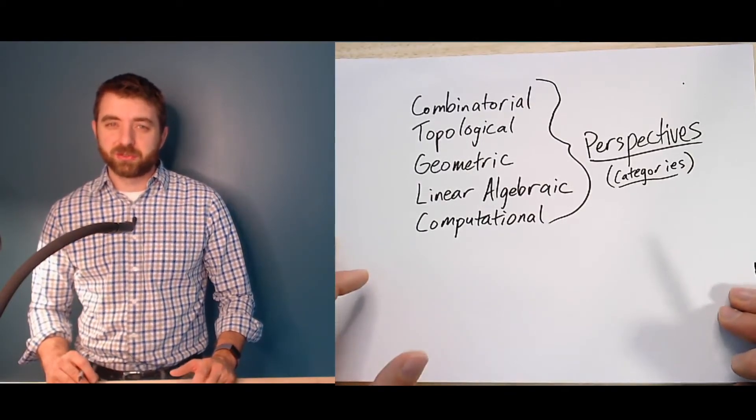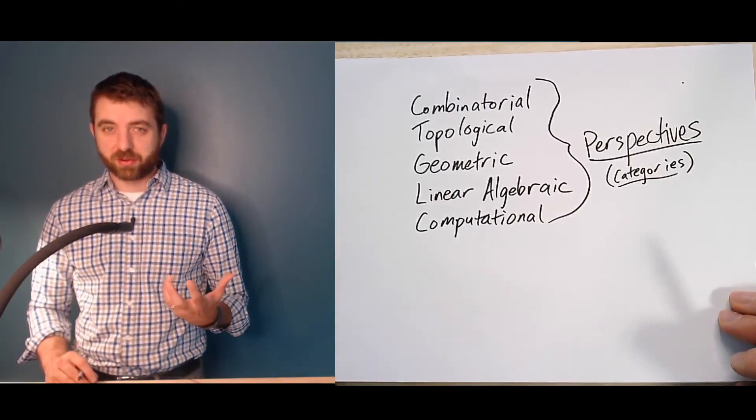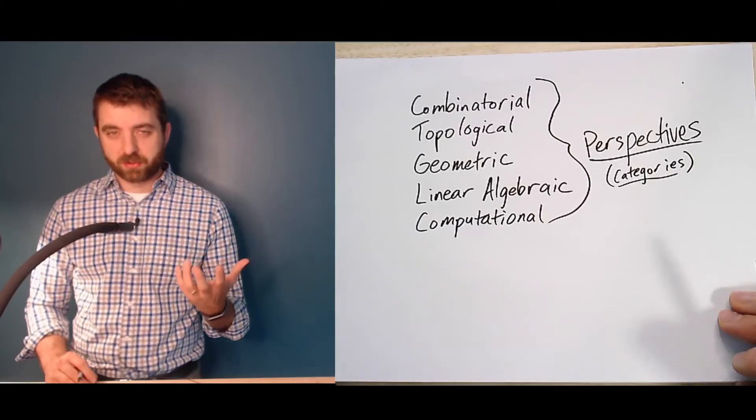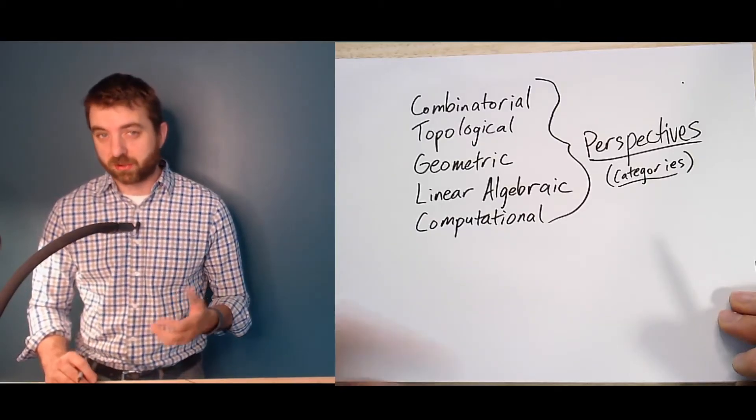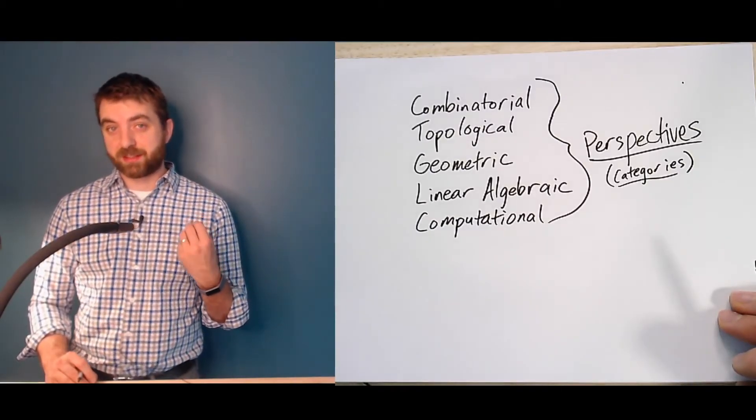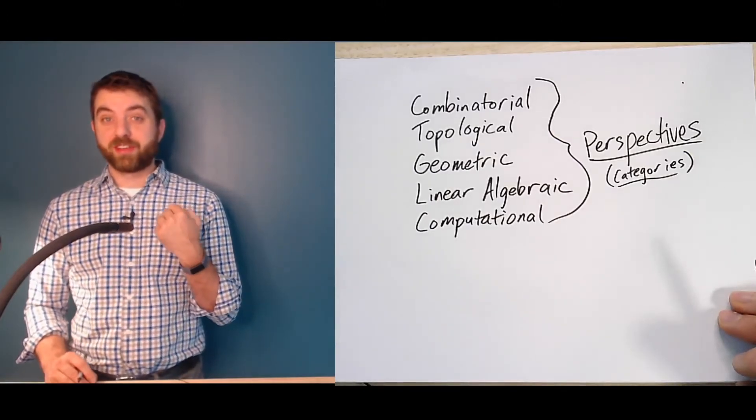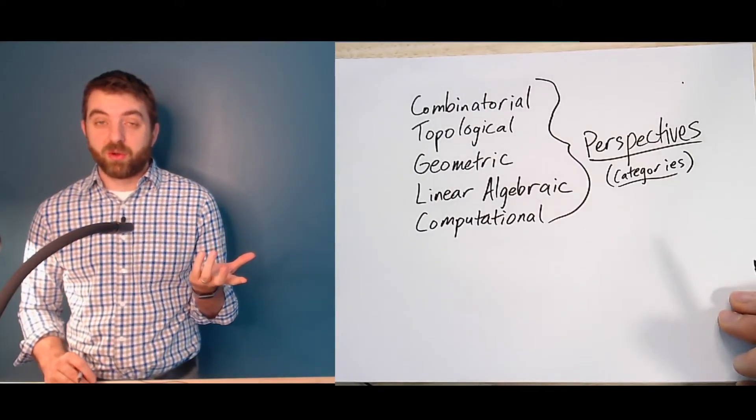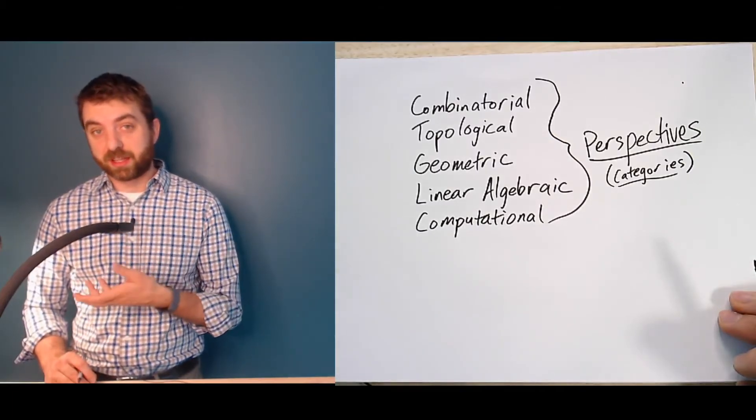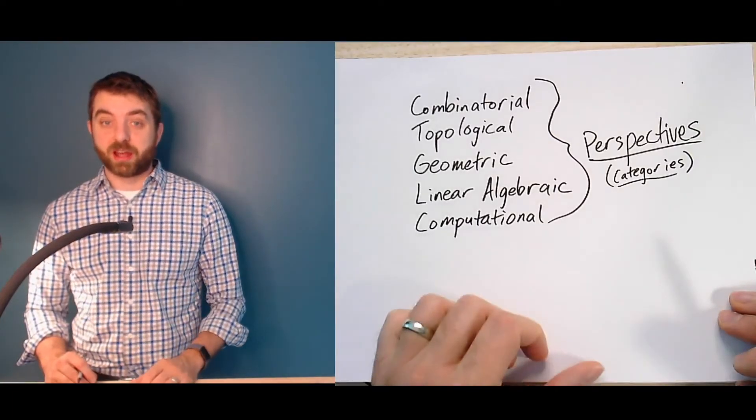That is, what is still true about a graph, a drawing of a graph, compared to its combinatorial representation. Or if you take some vector space that you've extracted from the graph, what properties still hold for that vector space that are related to, say, the combinatorial properties of the original graph.